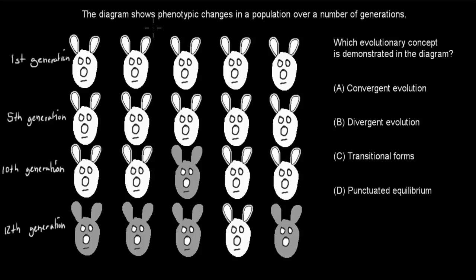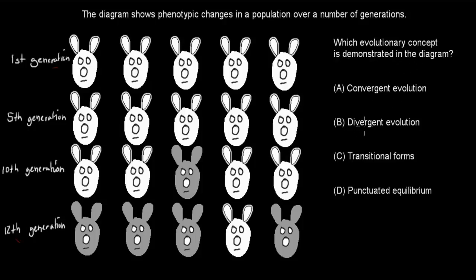Next question. The diagram shows the phenotypic changes in a population over a number of generations — first, fifth, tenth, and twelfth generation. Which evolutionary concept is demonstrated in the diagram? A. Convergent evolution. B. Divergent evolution. C. Transitional forms. D. Punctuated equilibrium. Pause the video and attempt the question.